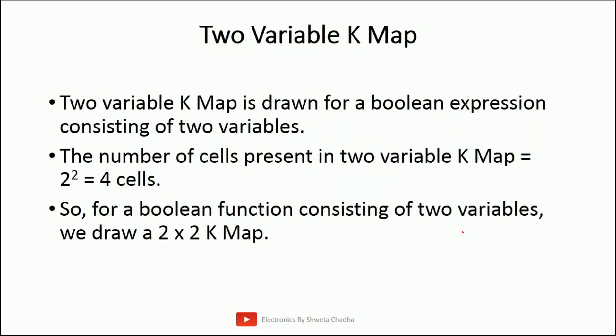The first type is the 2-variable K-map. In a 2-variable K-map, the total cells will be 4, so it is going to be a 2×2 matrix for the design and implementation of a 2-variable K-map.